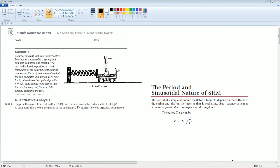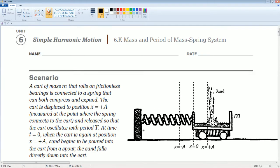All right, welcome. This is AP Physics workbook solution. Here we have Unit Six: Simple Harmonic Motion. The section is 6K: Mass and Period of a Mass-Spring System. You can read the scenario to yourself.